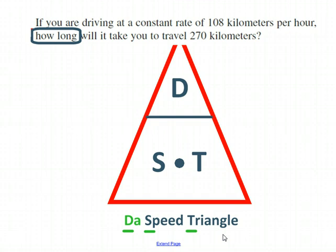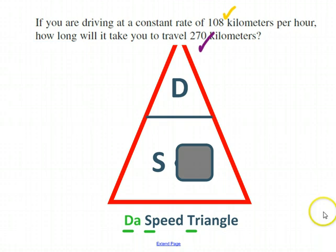You can see that you're asked how long it's going to take, and that's where you start with this triangle. Figure out what you're being asked. How long is a time question, so you cover time up. You'll notice that what you're given, particularly if you look at the units, are speed and distance. The distance is 270 kilometers, the speed is 108 kilometers per hour.